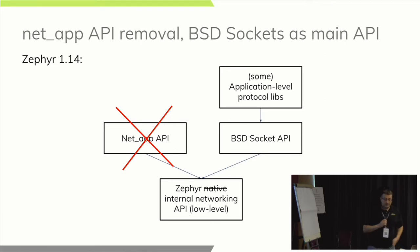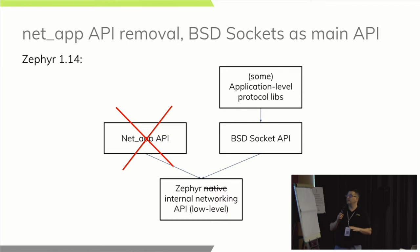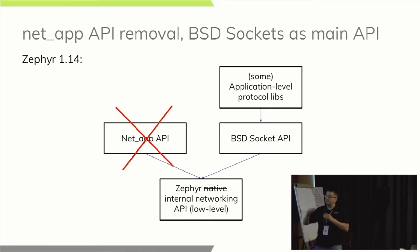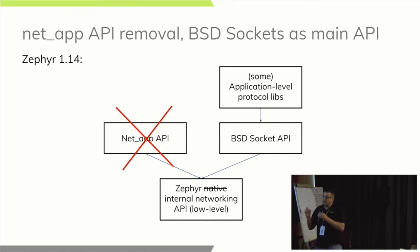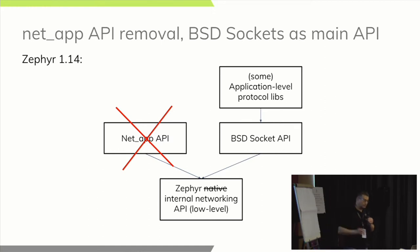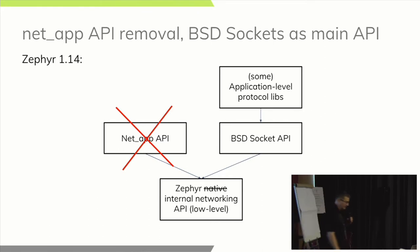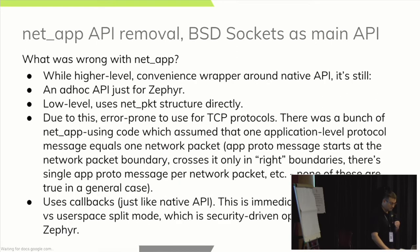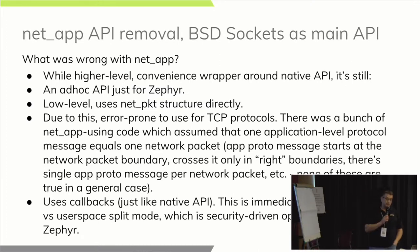For the 1.14 LTS release, the decision was to make BSD sockets API the main Zephyr networking API and re-implement application-level libraries on top of it, while deprecating and completely removing the NetApp application API. It's a somewhat unexpected move. Also, the native networking API is renamed to 'internal networking API' and is no longer recommended for usage in the docs.